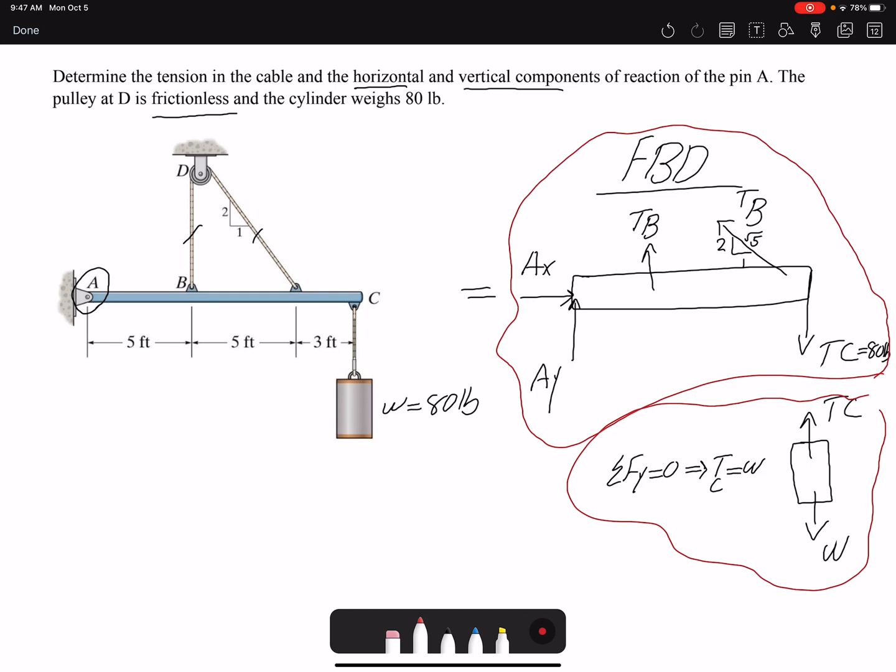You can see the TC is going to cancel out; that would be an internal force when I combine the two free body diagrams. But the main free body diagram that we deal with is the free body diagram of our beam. If I draw the dimensions, I have 5 feet here, 5 feet, and then 3 feet.